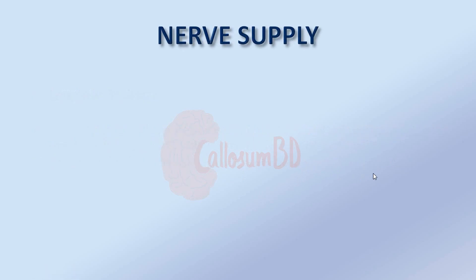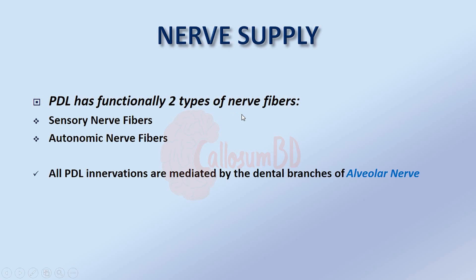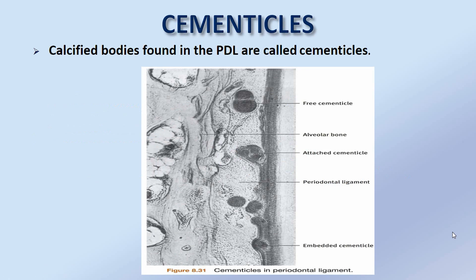The periodontal ligament has functionally two types of nerve fibers: sensory nerve fibers and autonomic nerve fibers. All periodontal ligament innervations are mediated by the dental branches of the alveolar nerve.